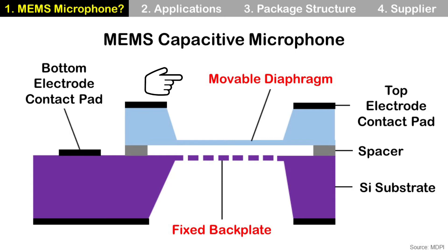The key elements are a movable diaphragm at the top and a fixed backplate at the bottom. These two elements form a capacitor. When the movable diaphragm moves up and down, its capacitance changes. By measuring this capacitance change, the MEMS microphone converts sound waves into a digital audio signal.